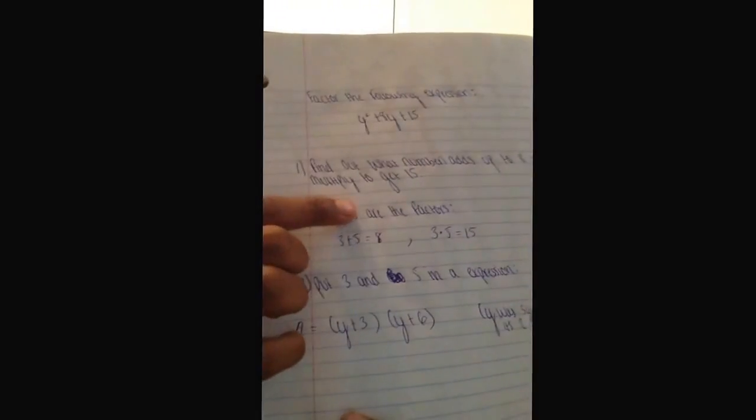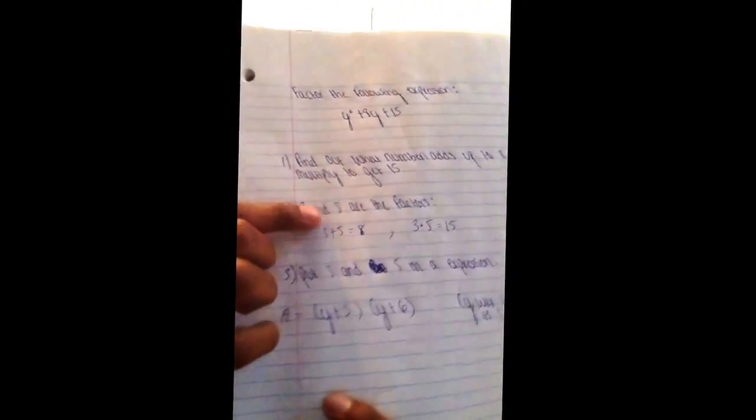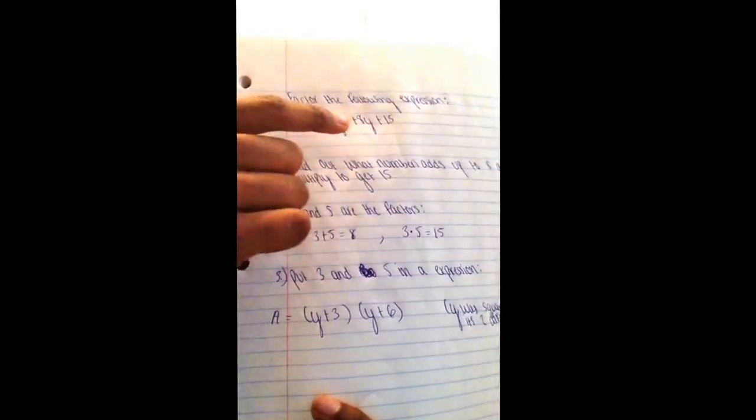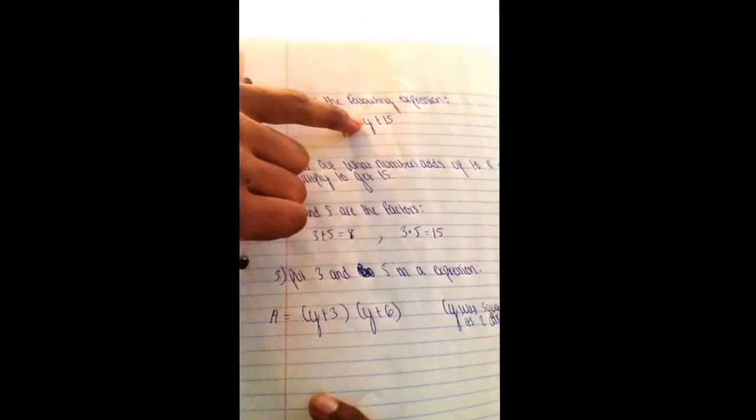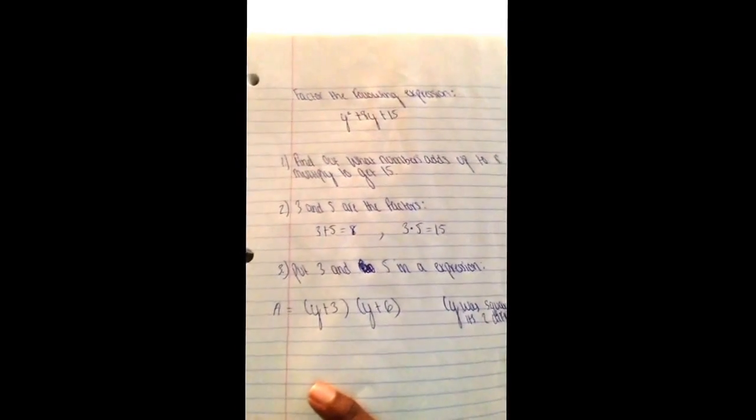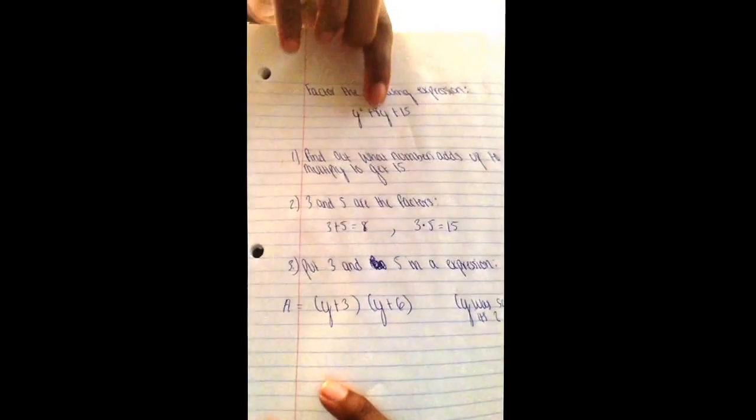Okay so the second thing you do is once you find out, which I got three and five. How do I know it's three and five? Three plus five is eight and three times five is 15. The way I got those numbers is basically if you know your times tables then you will know. Make sure in the middle the middle number you add, it has to add up, on the outside number is multiply.